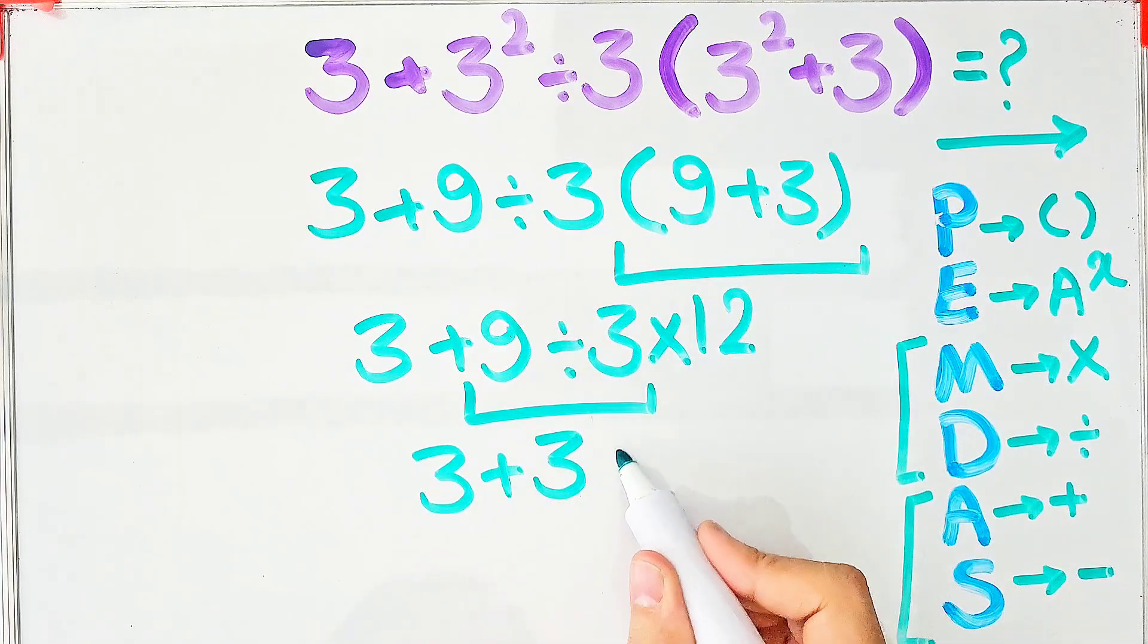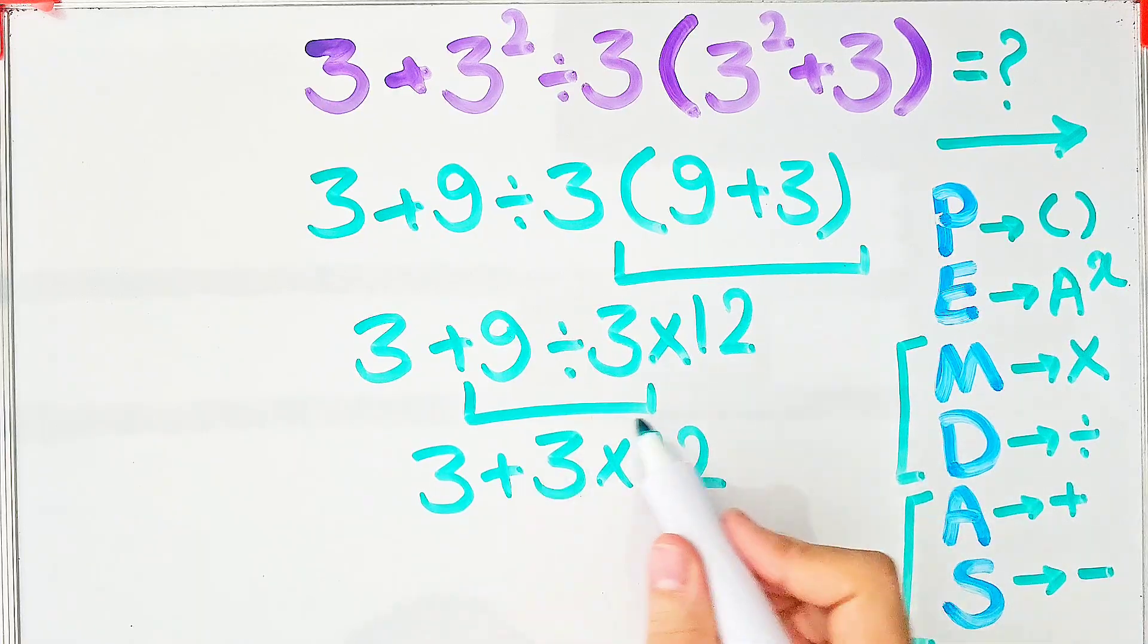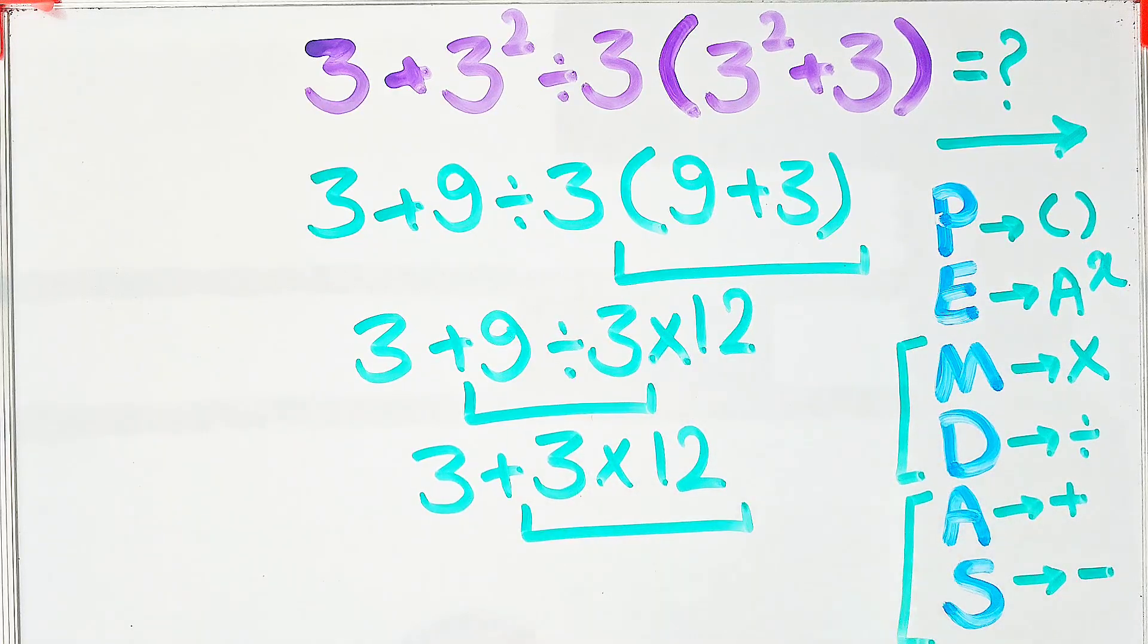In this step, we do this multiplication. 3 times 12 equals 36.